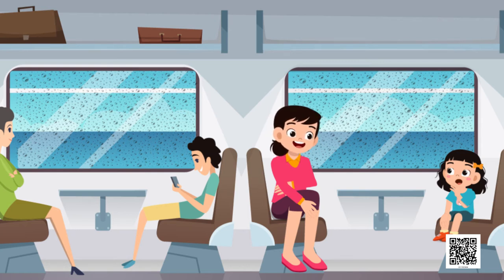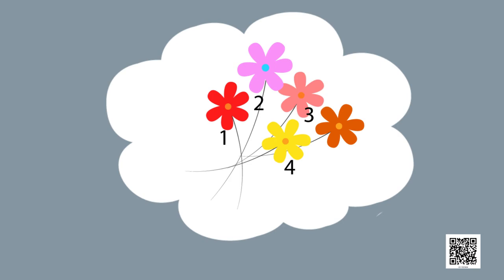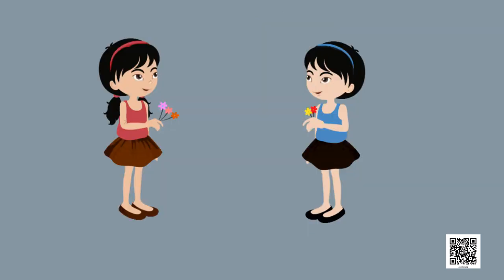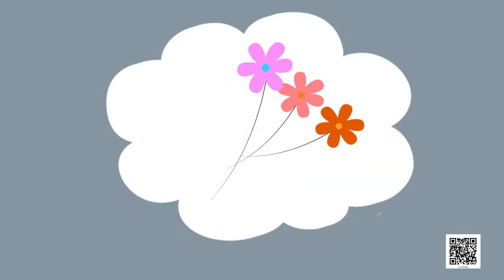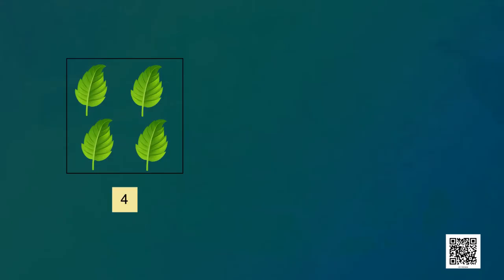Children, let us also do some subtraction now. Look — Minu has some flowers. Let's count: one, two, three, four, five — she has five flowers. She has given some flowers to Shibu — two flowers have been taken away. So now, how many flowers does she have? Count and find out. She now has three flowers. Five minus two is equal to three.